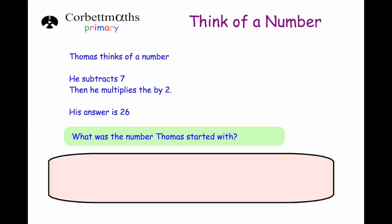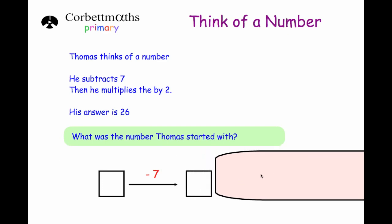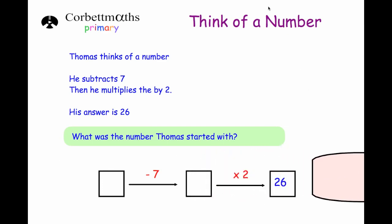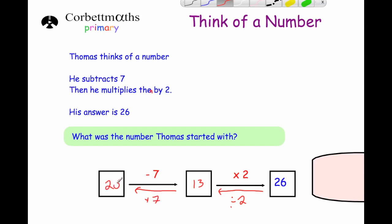The next question: Thomas thinks of a number, he subtracts seven and then multiplies by two, and his answer is twenty-six — what number did Thomas start with? Working backwards: the last thing he did was times by two, so we divide by two, giving thirteen. Then he subtracted seven, so we add seven: thirteen plus seven is twenty. Let's test it: twenty take away seven is thirteen, times by two is twenty-six.